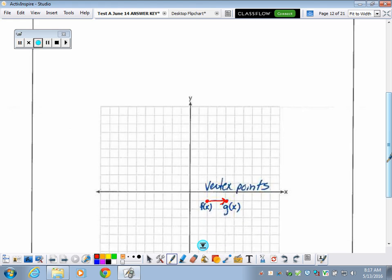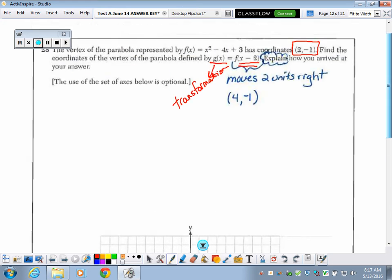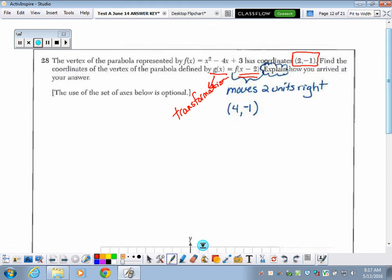It can be that simple. You could make your entire graph, your entire quadratic functions on here if you wanted, but really it's just the vertex points that you need to look at, or you could also look on your graphing calculator. Explain how you arrived at your answer. This would suffice for your explanation. Or, I could write it in a complete sentence. The vertex point moves two units to the right.